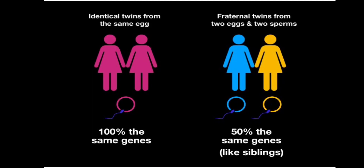To conclude: identical twins, or monozygotic twins, are formed from a single zygote — one single fertilized egg that splits into two parts, each developing into an individual embryo. They have the same genetic origin and therefore the same DNA. Fraternal twins, or dizygotic twins, are formed from two eggs fertilized by two different sperm. They share 50% of their genetic traits, just like any other siblings born at different times. This is all about twin studies.